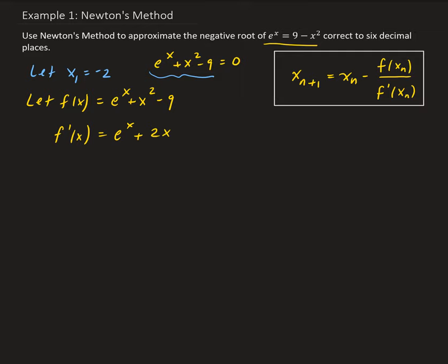So we have everything now. We're going to go ahead and implement Newton's method using this recursive formula shown in this box here. I chose x₁ as negative 2 because we want to obtain a negative root, and the hope is that by starting on the left side of the y-axis, this will converge to the negative root.